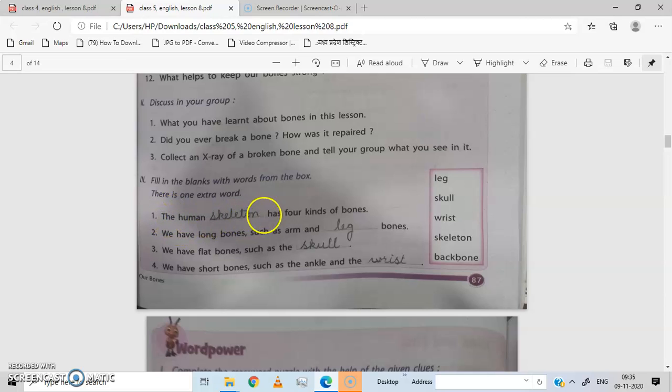First one, the human dash has four kinds of bones. The human skeleton has four kinds of bones. We have long bones such as arm and dash bones. We have long bones such as arm and leg bones. We have flat bones such as the skull. We have short bones such as the ankle and the wrist.